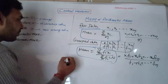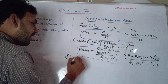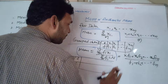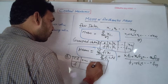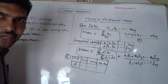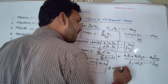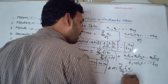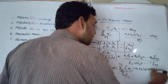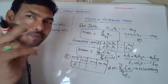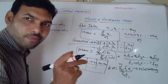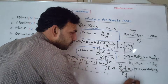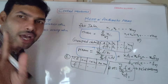This grouped data formula is the first case. The second case involves class intervals with frequencies — for example, 0 to 10, 10 to 20, 20 to 30. For class interval data, the arithmetic mean formula using the direct method is sigma fx divided by sigma f, capital N, where i equals 1 to N.